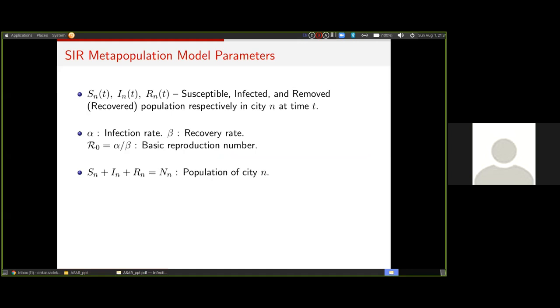Sn, In, and Rn would be susceptible, infected, and removed or recovered population at city n at time t. Alpha is the infection rate, beta is the recovery rate, and R0, which I think has gained quite popularity in past few months, is the basic reproduction number, which tells us how intensive this pandemic is. If R0 is higher, that means it is much more infectious. Physically speaking, R0 tells us how many people does an infected person infect. If one person infects two, those two will infect four, those four will infect eight, and so on, and in that case the R0 would be two. That's the basic idea behind basic reproduction number or R0.